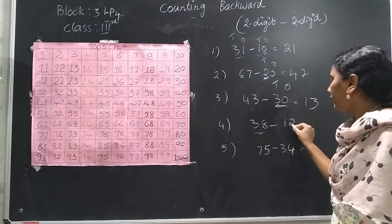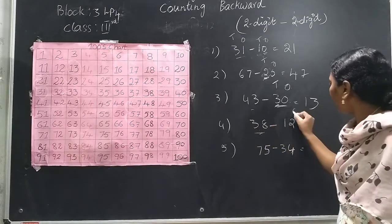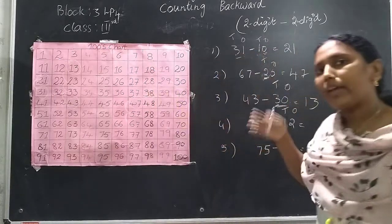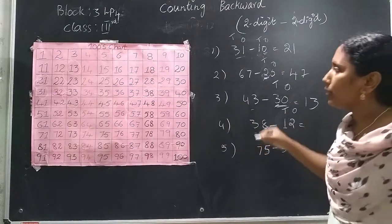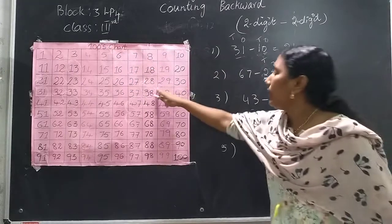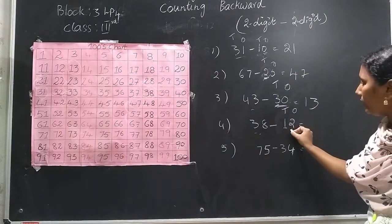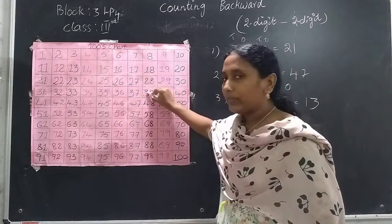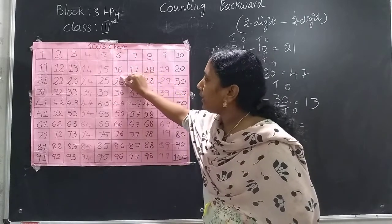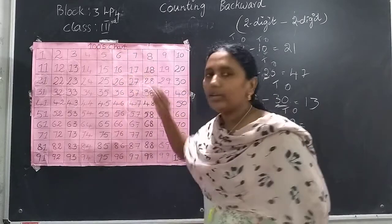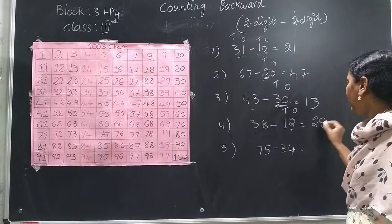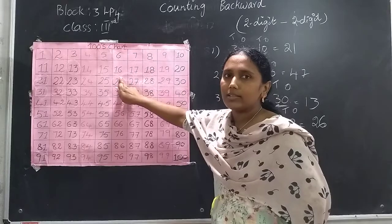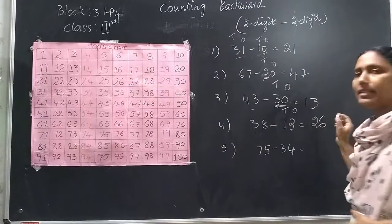38 minus 12 — find the difference. 1's and 10's place. Take the number 38. In the 10's place I have 1, so move upward 1 step: that is 28. In the 1's place I have 2. From 28, move backward 2 steps. So: from 38 move 1 step upward to reach 28, then from 28 move backward 2 steps, and you reach the number 26. The answer is 26.